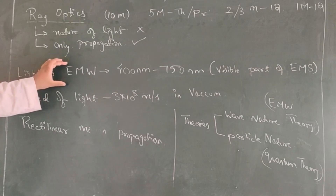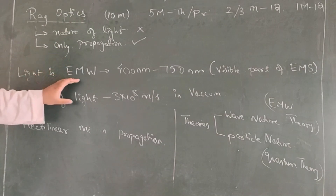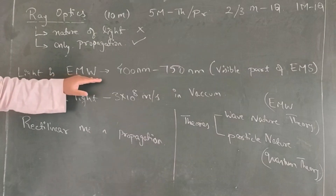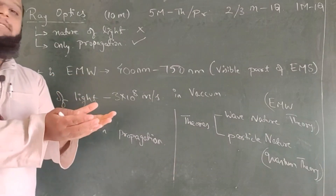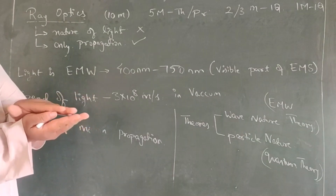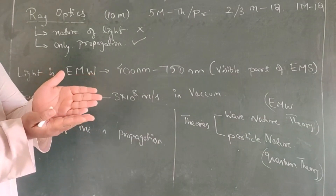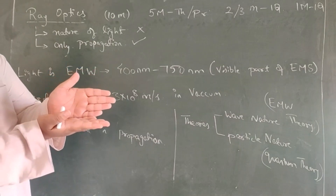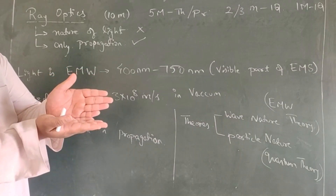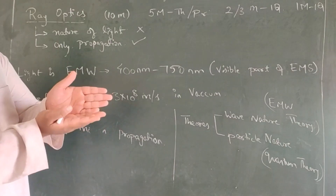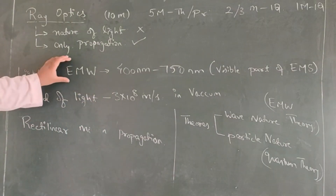Light is an electromagnetic wave — this we have learnt before. What do you mean by electromagnetic wave? It means that light is in a waveform that has one part as an electric field and the other part as a magnetic field — one electric field and one magnetic field at right angles to each other. And the light particles are travelling perpendicular to it. This you have learnt in the form of transverse waves in your schooling.